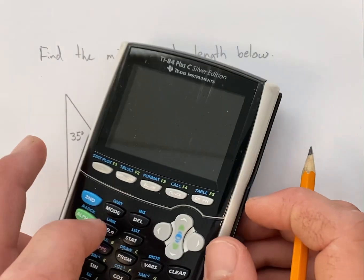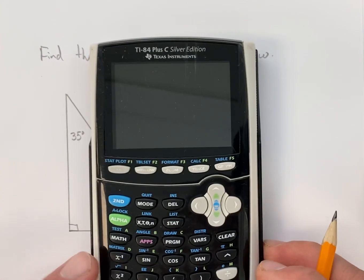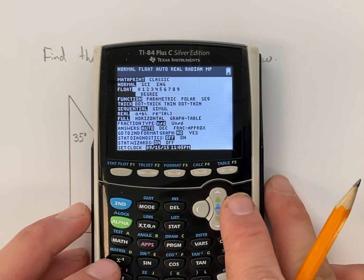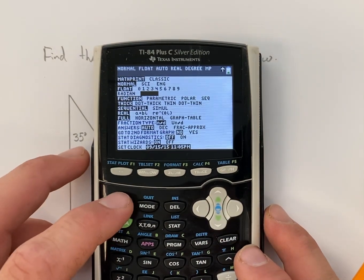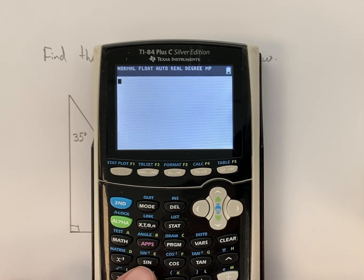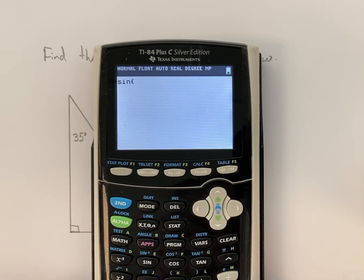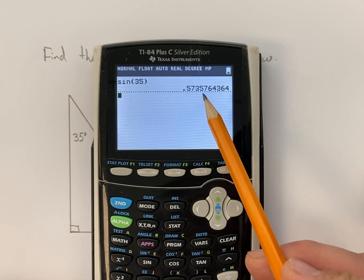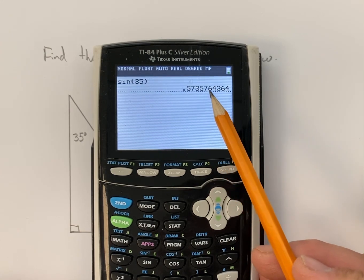Now we can evaluate sine of 35 using the calculator. We just have to make sure that our calculator is in the correct mode. In my case it's in degrees. And we'll go ahead and use the sine button. We'll type sine of 35, and we'll record that to four decimal places, which is 0.5736.